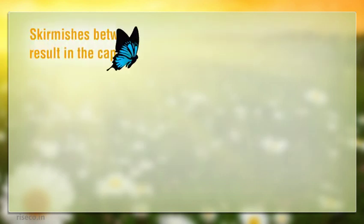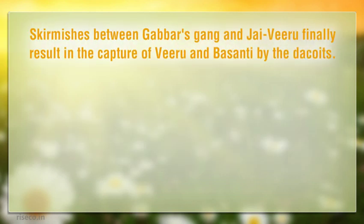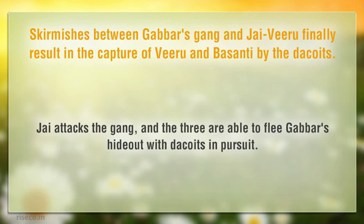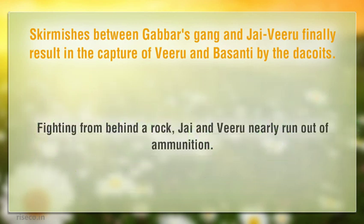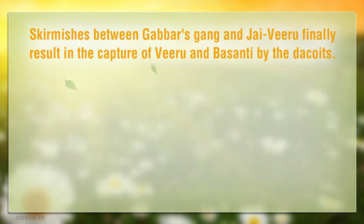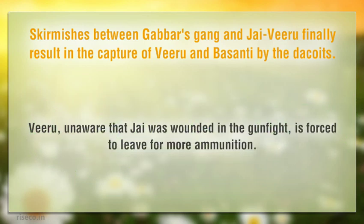Skirmishes between Gabbar's gang and Jai and Veeru finally result in the capture of Veeru and Basanti by the dacoits. Jai attacks the gang and the three are able to flee Gabbar's hideout with dacoits in pursuit. Fighting from behind a rock, Jai and Veeru nearly run out of ammunition. Veeru, unaware that Jai was wounded in the gunfight, is forced to leave for more ammunition.